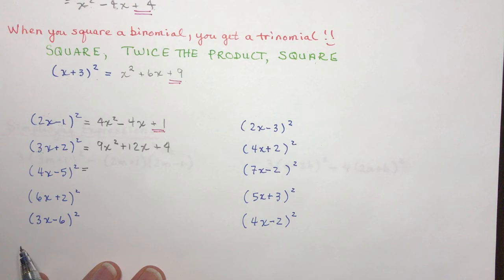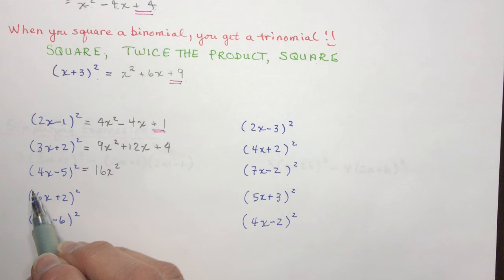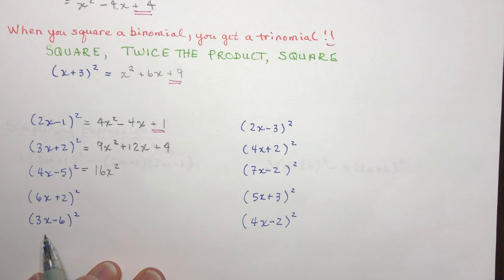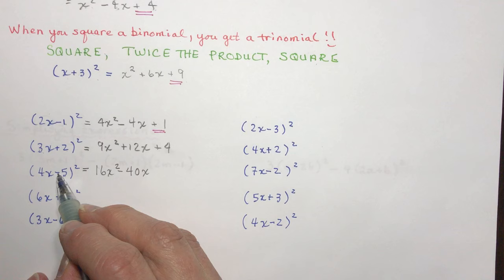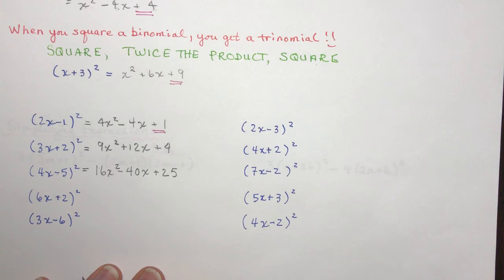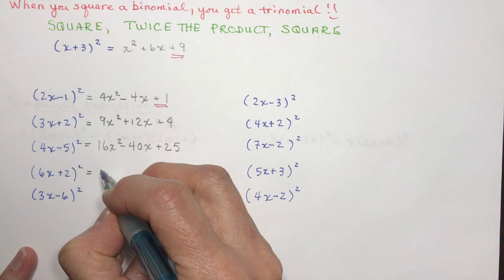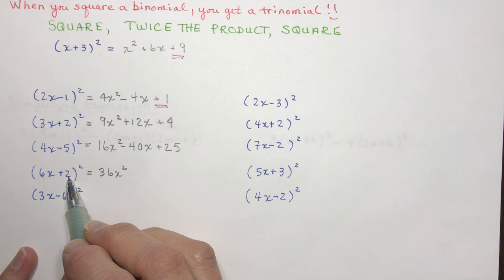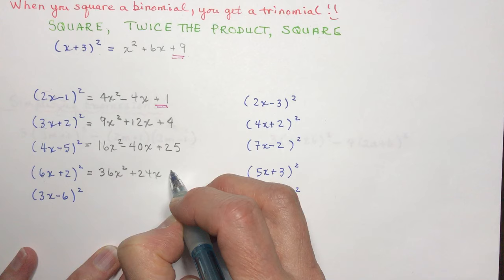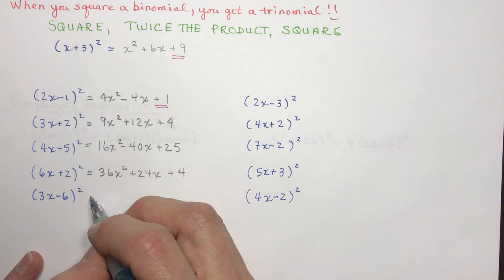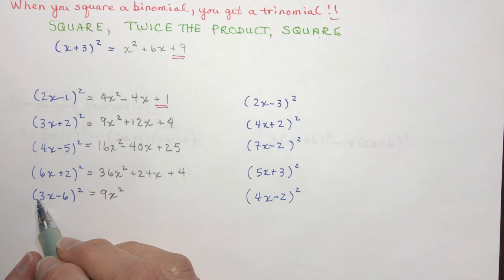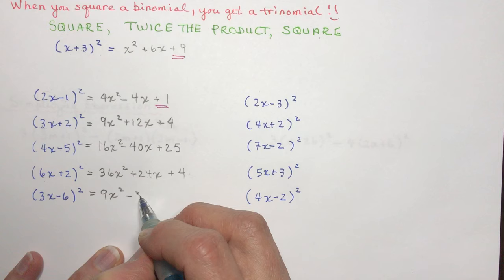For (4x − 5) squared: square the first term, 4x times 4x is 16x squared; product of 4x and −5 is −20x, double it gives −40x; square the last term — a negative times a negative is positive, so all last terms are positive. For (6x + 2) squared: 6x squared is 36x squared; product of 6x and 2 is 12x, twice that is 24x; and square the last term.